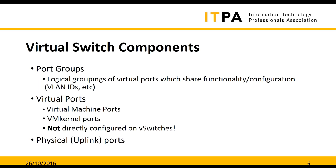In a virtual switch, we build port groups. The closest analogy in physical switching would probably be VLANs. Port groups are logical groupings of virtual ports which share functionality and configuration — not just VLANs in virtual networking, but some other things as well. Those port groups are made of virtual ports, which can have different types. The two main types are virtual machine ports and VMkernel ports.